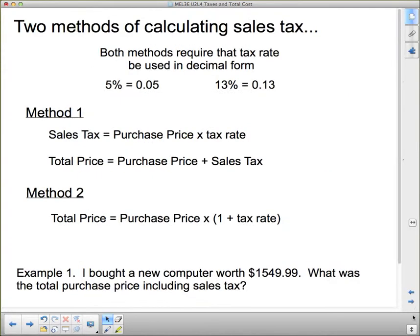So now let's see how we calculate these things. There are two methods of calculating sales tax. Both methods require that the tax rate be used in decimal form. So 5% must be written as 0.05 before you make any calculations with it.